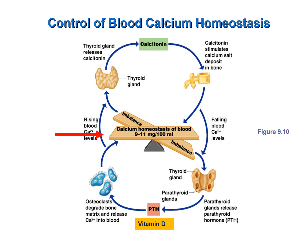Parathyroid hormone and vitamin D are the primary regulators of blood calcium homeostasis. Calcitonin plays a very minor role — in fact, if the thyroid gland is completely removed and there is no calcitonin production, it does not cause any problems in the patient.